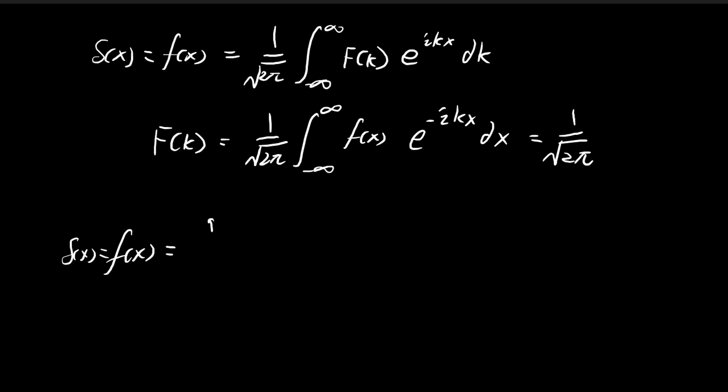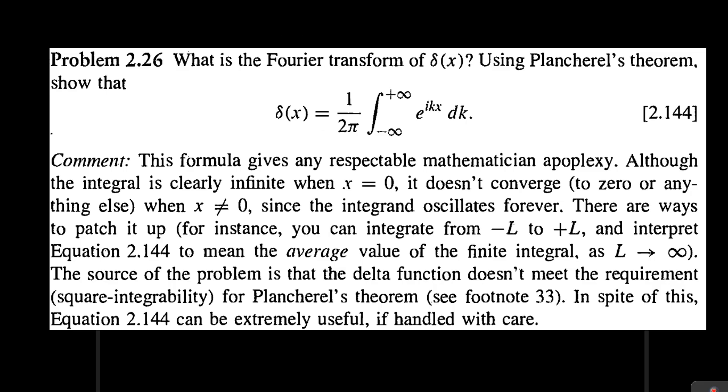So we substitute 1 over the square root of 2 pi into f of k. And then of course we can just pull out the 1 over the square root of 2 pi and combine it with the other 1 over the square root of 2 pi on the outside. So we have 1 over 2 pi, and then we have an integral from negative infinity to positive infinity. And so there we have it. This is how you apply Fourier transform to that Dirac delta function. So you see that this is exactly the expression that Griffiths gives us.